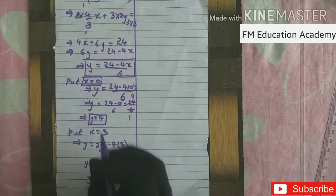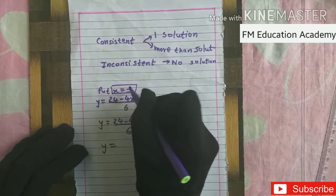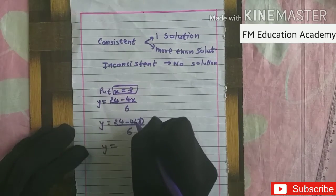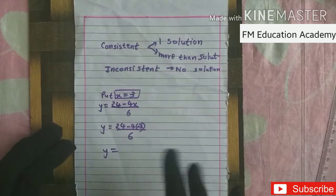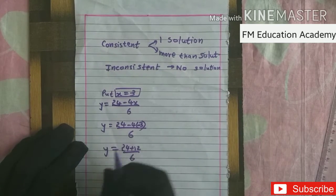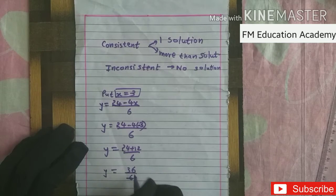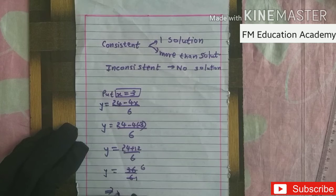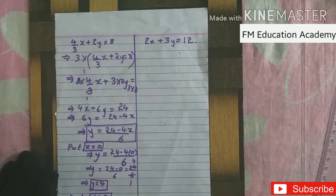Substituting x = −3: y = (24 + 12)/6 = 36/6 = 6. So when x = −3, y = 6.